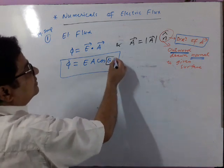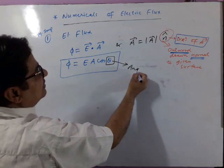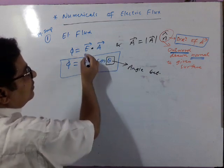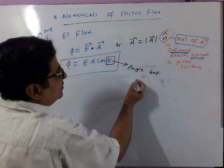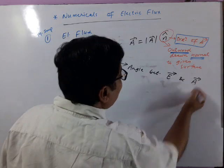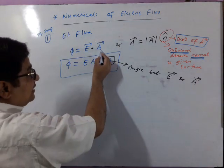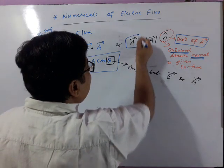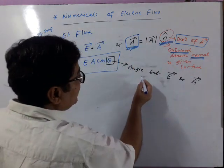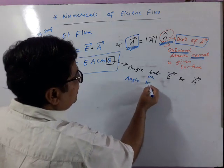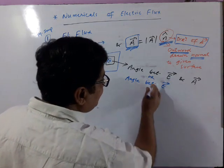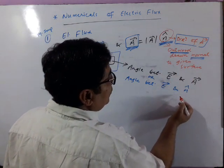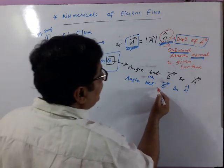The most important point is: what is θ? Theta is the angle between the two vectors in the dot product — here, between E-vector and A-vector. Since the area vector's direction is given by n-cap, θ is effectively the angle between E-vector and n-cap. We will focus on this angle between E-vector and n-cap.